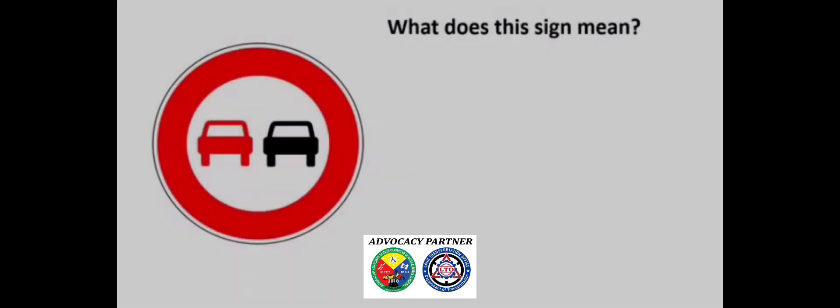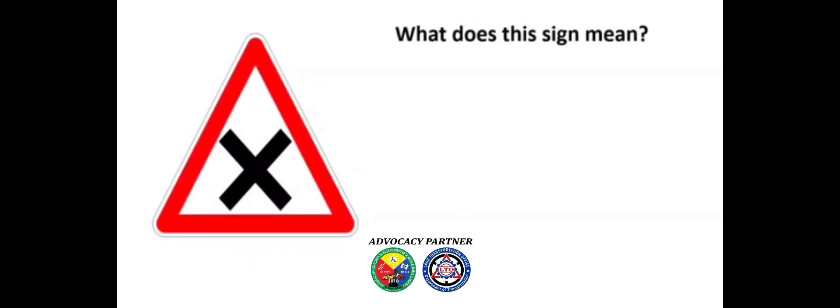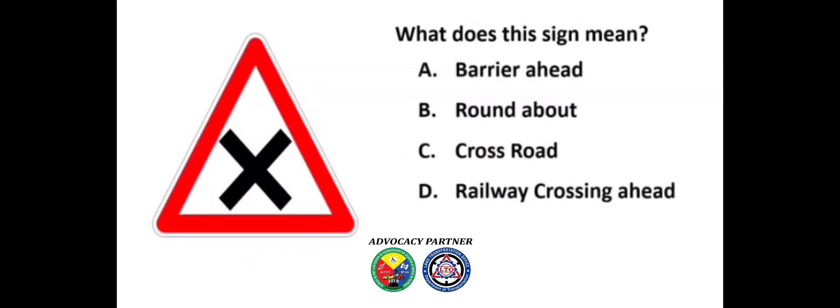What does this sign mean? A) No overtaking, B) No motor vehicles, C) All motor vehicles prohibited, D) Only for motor vehicles. Answer: A) No overtaking. What does this sign mean? A) Barrier ahead, B) Roundabout, C) Crossroad, D) Railway crossing ahead.